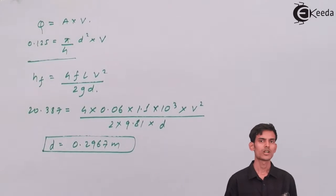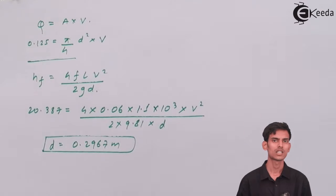So the first part of the question is over. It was asked to calculate diameter. The diameter comes out to 0.2967 meter. In terms of millimeters, it comes out to 296.7 mm.